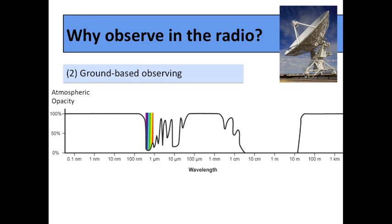Another reason to observe in the radio. Earth's atmosphere actually absorbs most of the radiation coming from space, most of the electromagnetic spectrum. So you see here those lines that are so up at the top? That means full absorption. That light doesn't get to us at all.